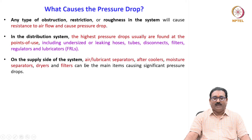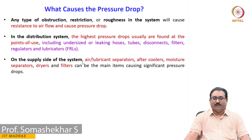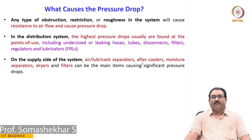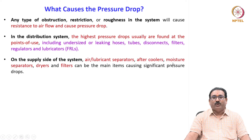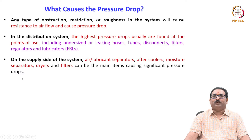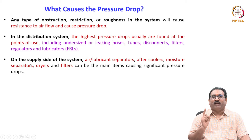On the supply side of the system, air-lubricant separators, after coolers, moisture separators, dryers, and filters can be the main items which cause significant pressure drop. Both at the point of use and at the generation side, you have to take much care in reducing the pressure drop.